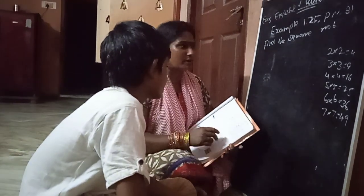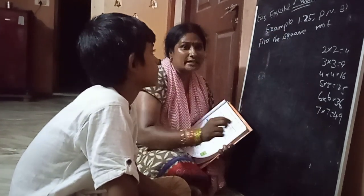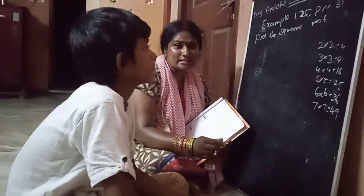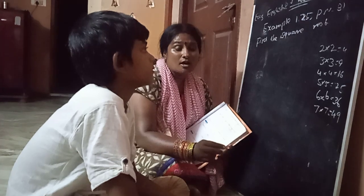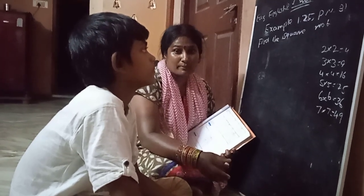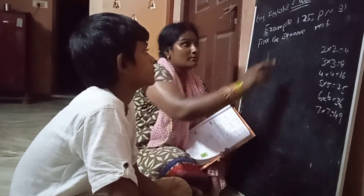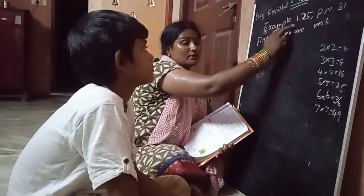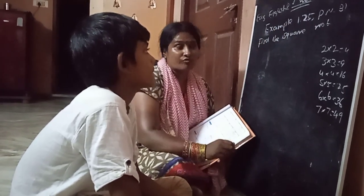Find the square root of the number — page number, English Mathematics, English book, Math book, page 31, example 1.25.